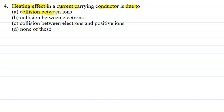Option A, collision between ions. Option B, collision between electrons. Option C, collision between electrons and positive ions. Option D, none of these. In four options mein hamei correct answer select karna hai.